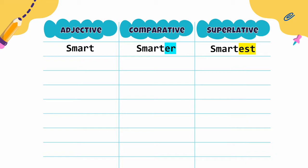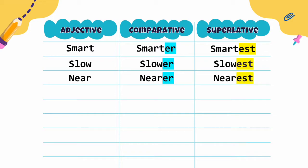Slow — lambat, slower — lebih lambat, slowest — paling lambat. Near — dekat, nearer — lebih dekat, nearest — paling dekat. Old — tua, older — lebih tua, oldest — paling tua.